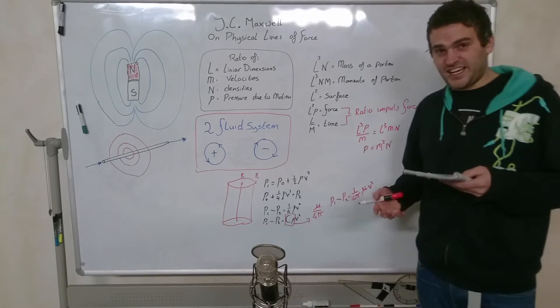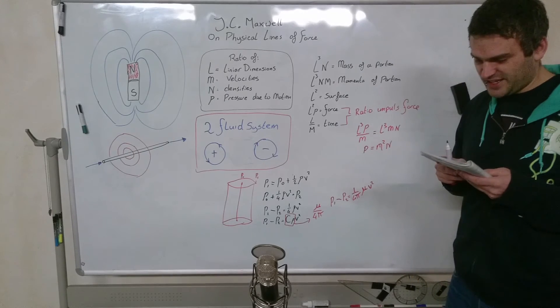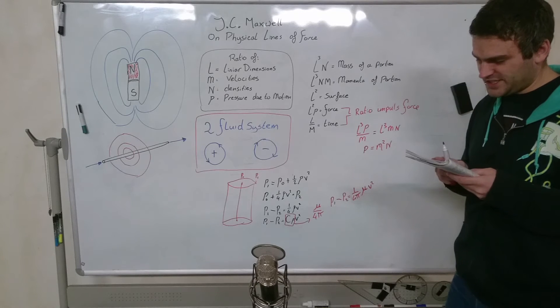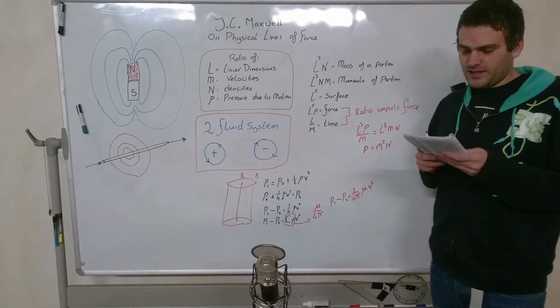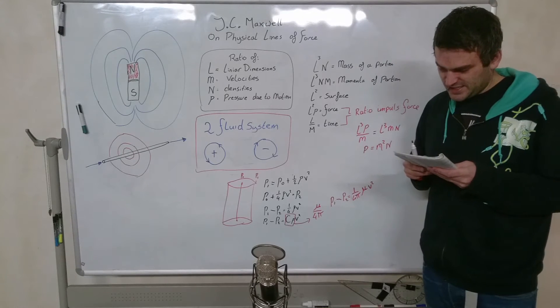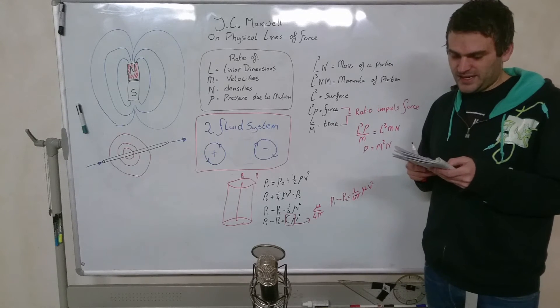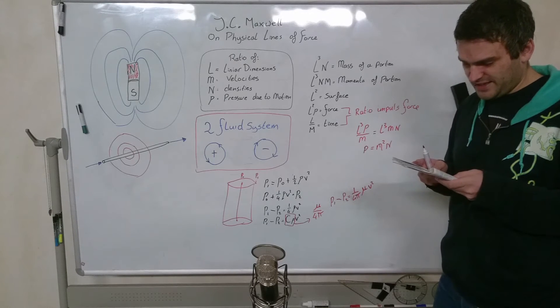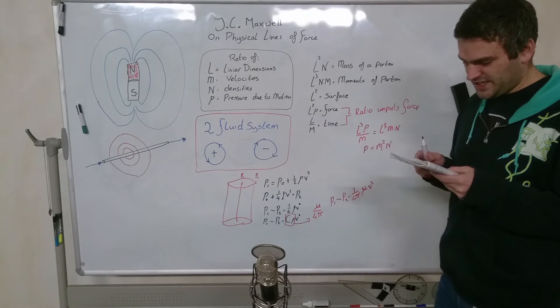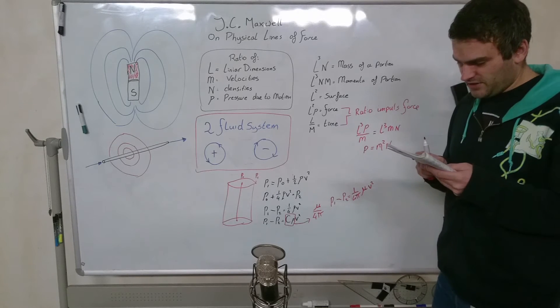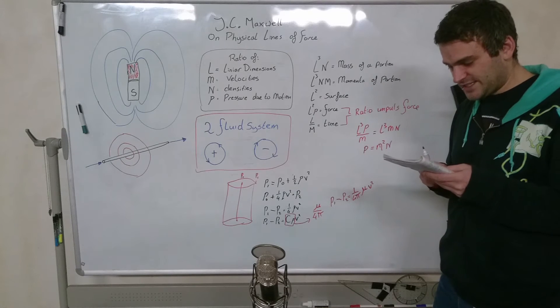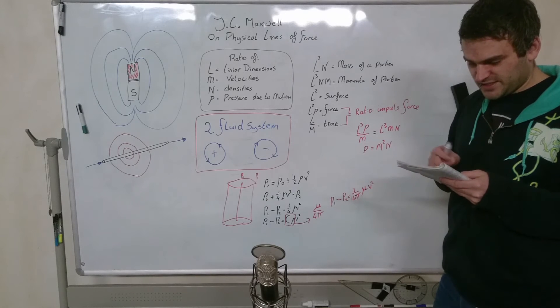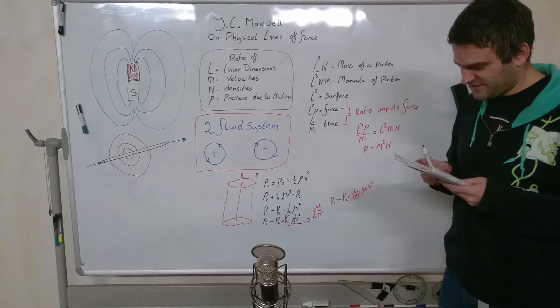A medium of this kind, filled with molecular vortices having their axis parallel, differs from any ordinary fluid in having different pressures in different directions. If not prevented by properly arranged pressures, it would tend to expand laterally. In so doing, it would allow the diameter of each vortex to expand, and its velocity to diminish in the same proportion. In order that a medium having these inequalities of pressure in different directions should be in equilibrium, certain conditions must be fulfilled, which we must investigate.